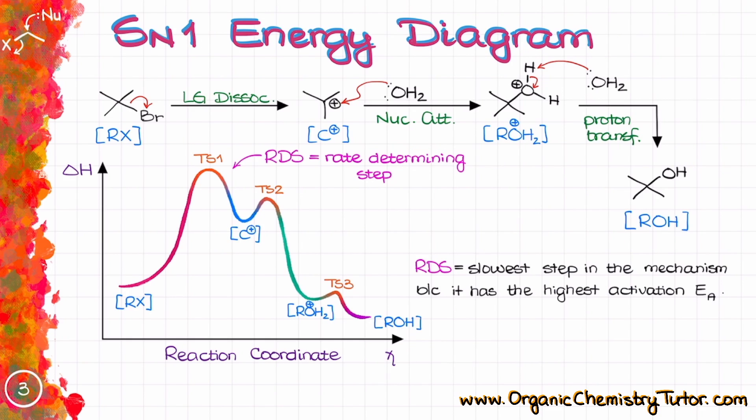So from the energy diagram perspective, here is what we'd get if we plot this reaction onto the reaction coordinate energy diagram. This particular reaction has three steps. So the first step, which is the leaving group dissociation is right over here in our energy diagram. And that gives us our carbocation.